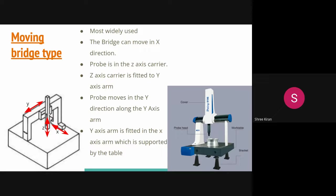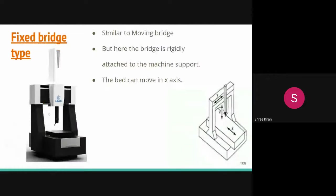In the moving bridge type, the bridge moves in the X direction along two vertical posts, while the table remains stationary. In the fixed bridge type, the bridge is rigid — attached to the machine support — and the table moves in the X direction instead.